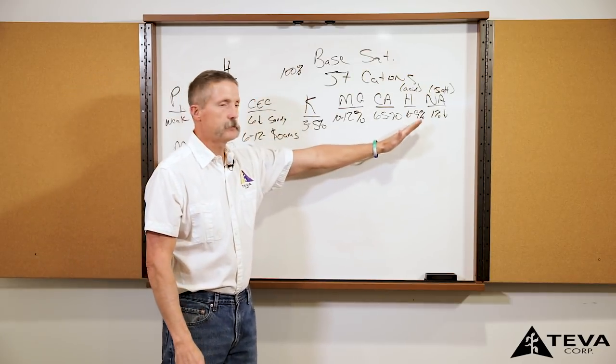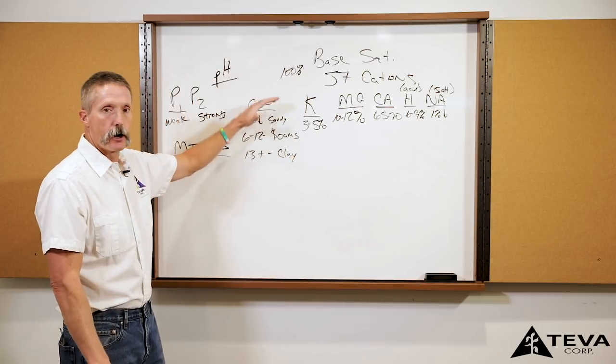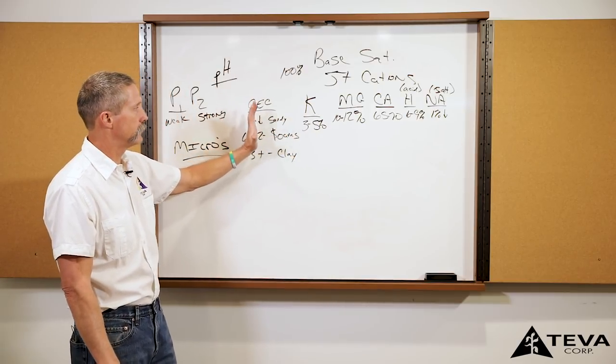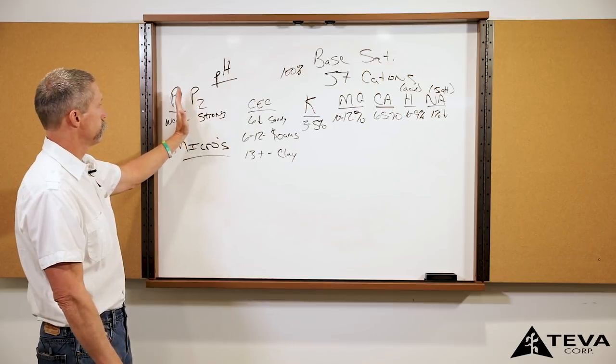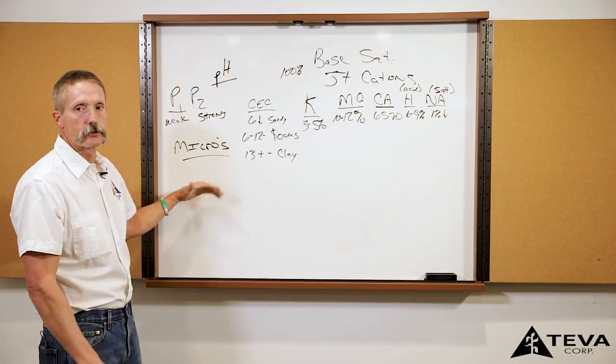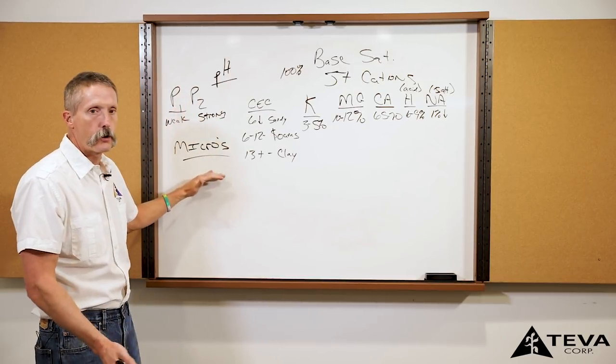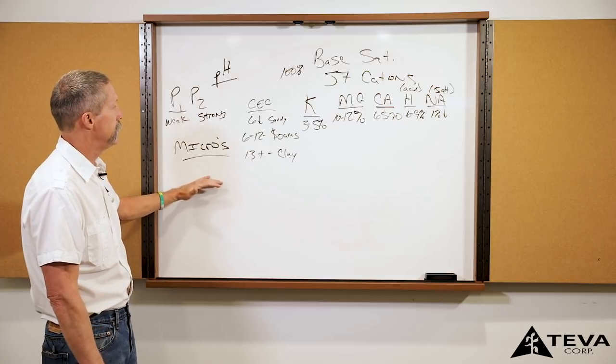I want to look at these base saturations first, see what kind of dirt I'm working with, what I've got to deal with. Then I look at your phosphate levels and then at your micros, so we know whether we need to add boron or zinc or manganese, whatever it may need to be.